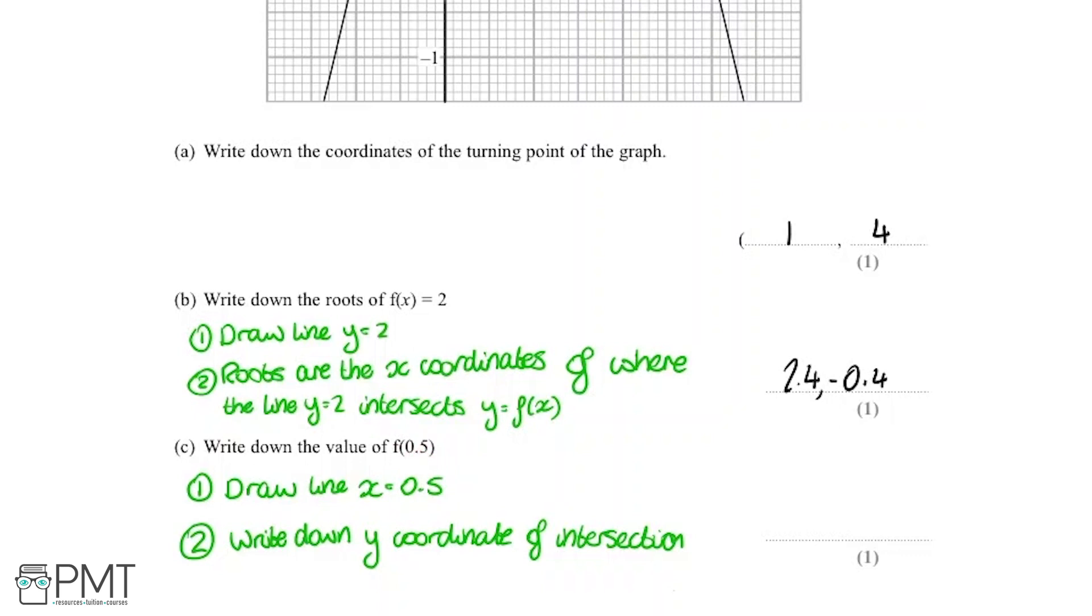For the second step, we're going to write down the y-coordinate of the intersection, because this is going to be the value of f(0.5).